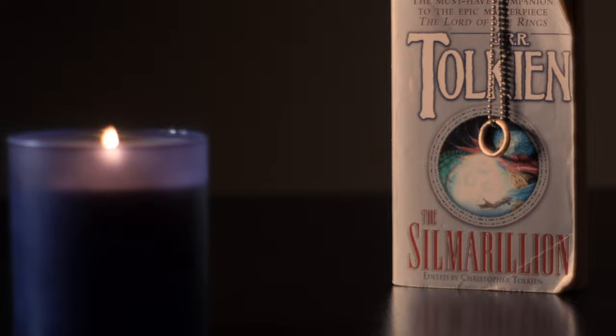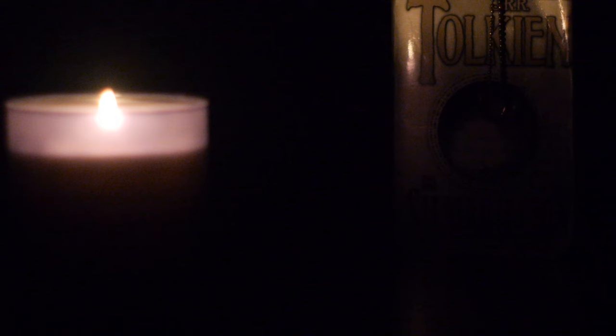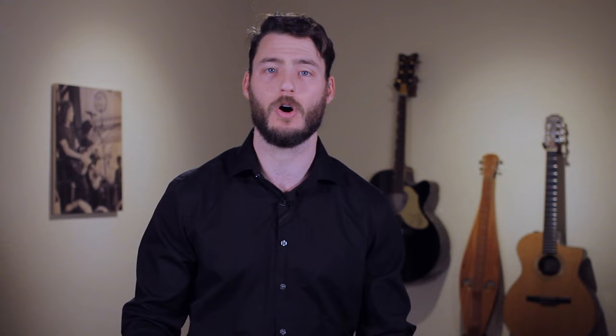For our first technique, we're simply going to be placing a motivated light just off camera as a constant source. While it's a bit unsophisticated, this will at least allow for the image to have a more aesthetically pleasing look than if you simply try to expose the camera to the firelight itself. Now, if like myself you're a fan of classic films, you have undoubtedly seen this technique on display.